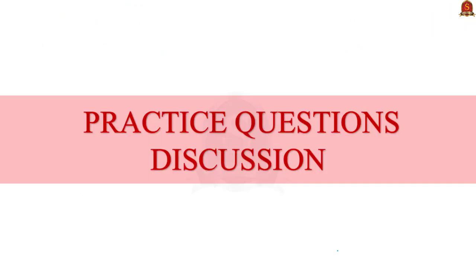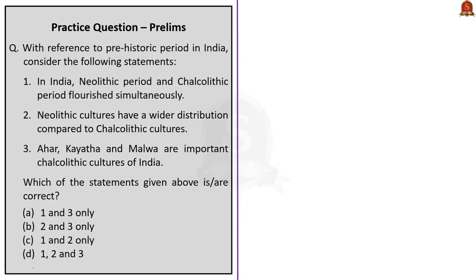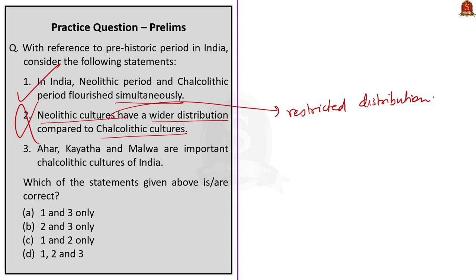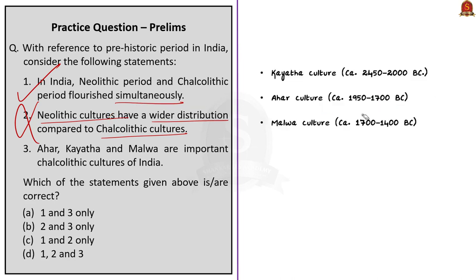Now for the practice discussion session. The first question on ancient history asks: with reference to the prehistoric period in India, consider the following statements. Statement 1 — In India, the Neolithic period and Chalcolithic period flourished simultaneously — is correct, as we saw during discussion. Statement 2 — Neolithic cultures have a wider distribution compared to Chalcolithic cultures — is incorrect, because Neolithic cultures have a comparatively restricted distribution. Statement 3 — Ahar, Kayatha, and Malwa are important Chalcolithic cultures of India — is correct. Kayatha culture was around 2450–2000 BC, Ahar culture around 1950–1700 BC, and Malwa culture around 1700–1400 BC. The correct answer is option A: one and three only.